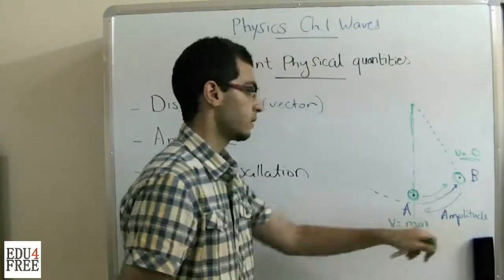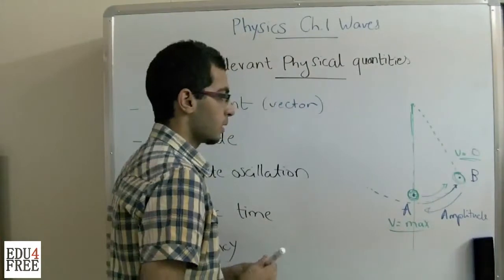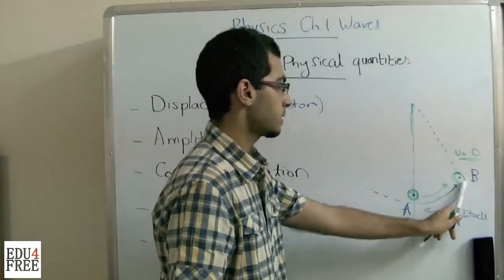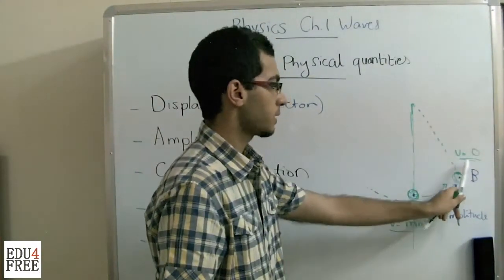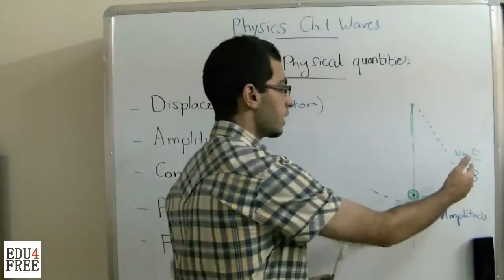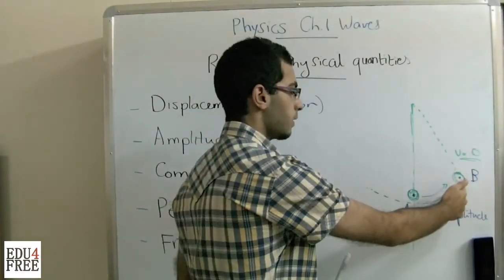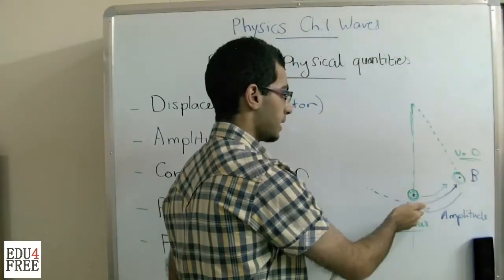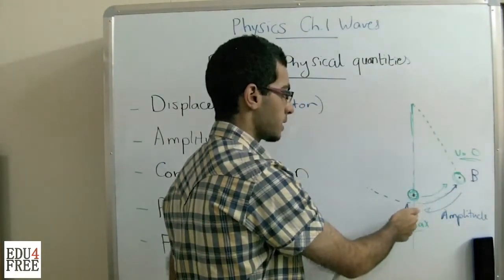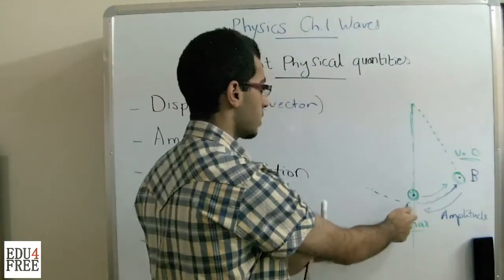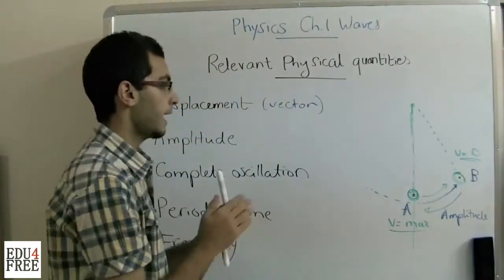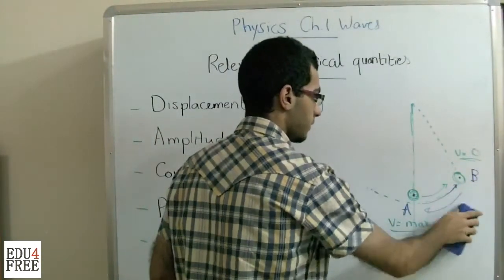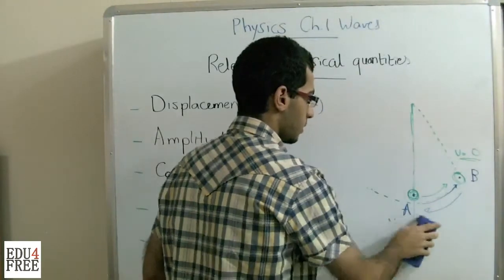Amplitude may be defined as the distance in the path of motion where at one point velocity is maximum and at the other point velocity is zero. When the body moves from here, the velocity is maximum. It stops — velocity is zero. When it returns, the velocity becomes maximum again, then stops so velocity becomes zero. This is our second physical quantity.